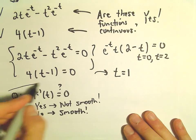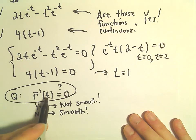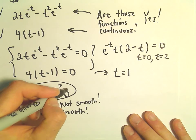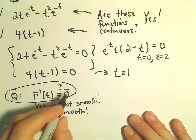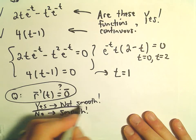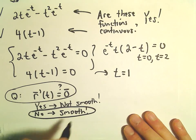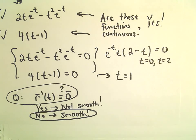So to answer our question, is there a value of t so that the derivative equals 0? I should put a little line over my 0, because we're trying to get the 0 vector. And in this case, the answer is no. So that would tell us that our curve is, in fact, smooth.